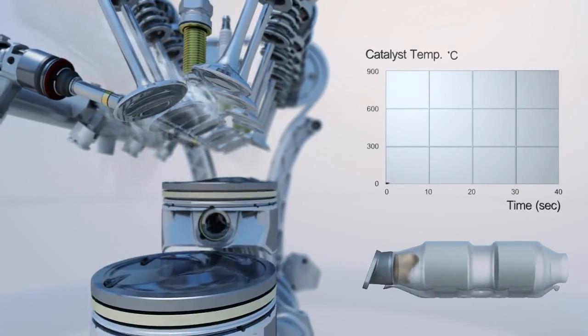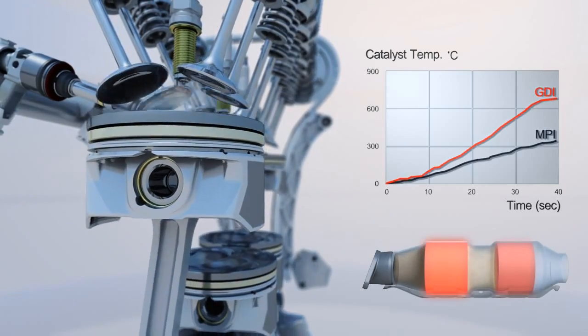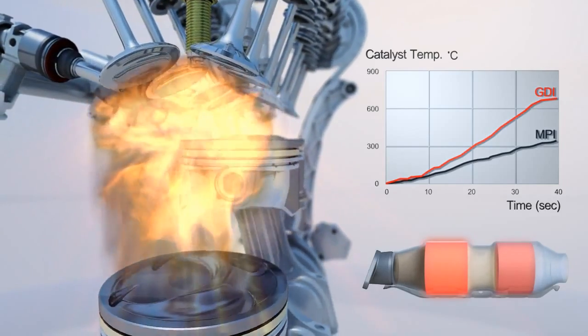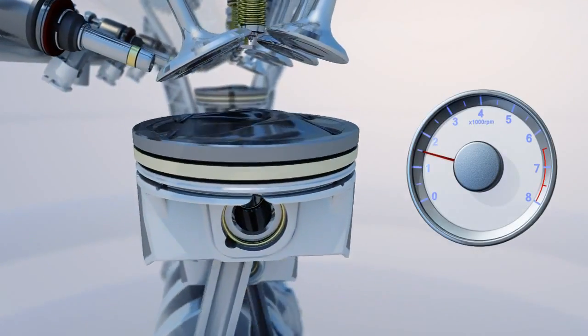Thanks to the fast light off, the exhaust emission is reduced. In normal driving conditions, the engine is controlled for the best performance and fuel economy.